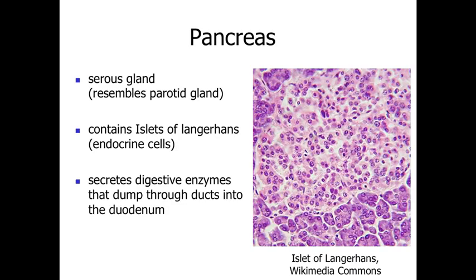In addition to the salivary glands, which release their secretions at the opening of the oral cavity, we also have two relatively large glands — the pancreas and the liver — associated with providing materials for digestion. These glands dump their materials into the digestive tract at the level of the duodenum, essentially adding their secretions into the small intestine after materials have been processed and chemical breakdown has occurred within the stomach.